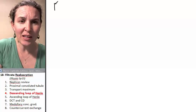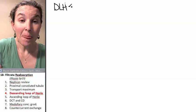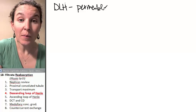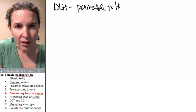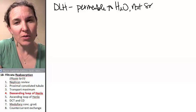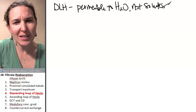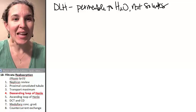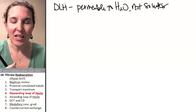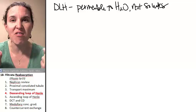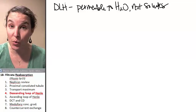Descending loop of Henle - they are permeable to water but not solutes. What's that mean? Water can pass through, but we don't have any transporters to deal with any solutes. The walls of the descending loop of Henle are thinner, and only water can come through.